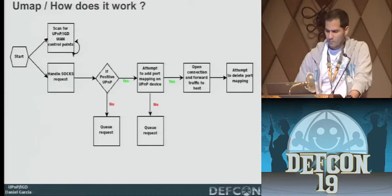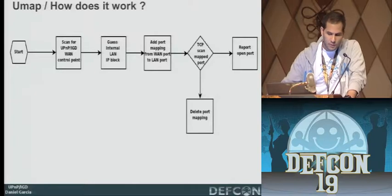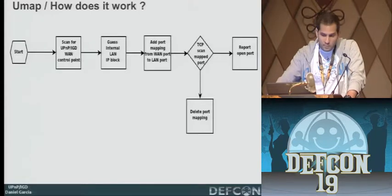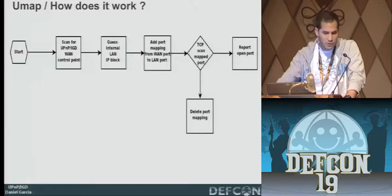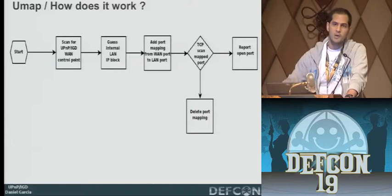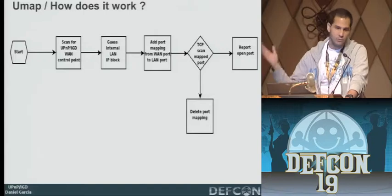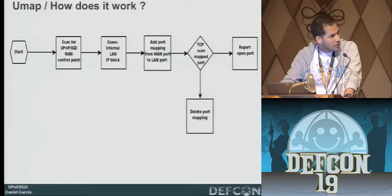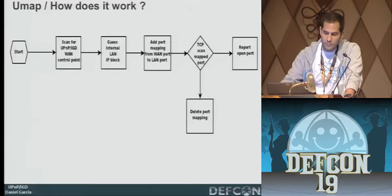We also have the internal host scanning part. It checks for open control points, then tries to guess the IP or internal LAN block being used. It adds a port mapping for each internal IP — for example, to scan port 21 of all hosts inside the LAN, it adds mappings for 10.0.0.1 port 21, maps it to an external port, then checks if that port is open from outside. If it's open, you can establish a connection to that internal host and its services.